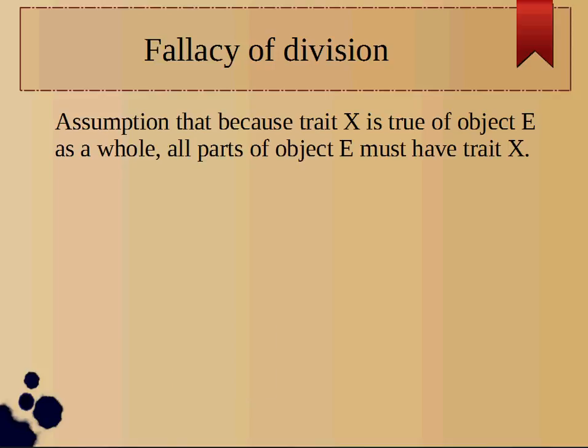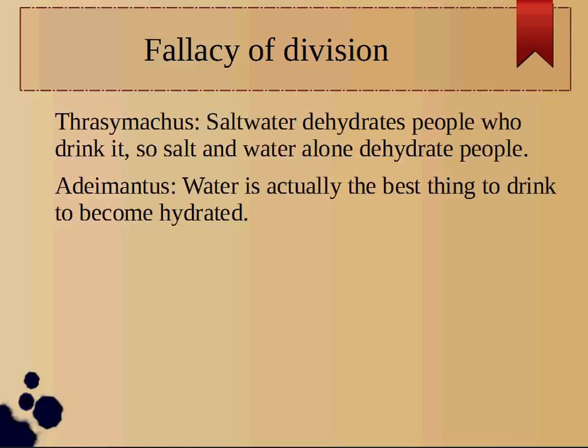The fallacy of division is the opposite of the fallacy of composition. It occurs when someone makes the assumption that because trait X is true for object E as a whole, all parts of object E must have trait X.